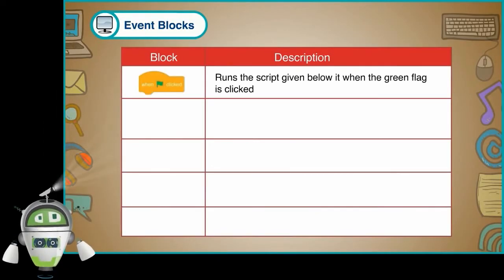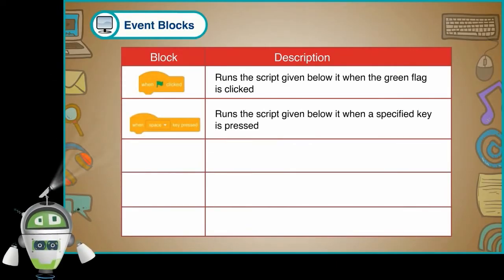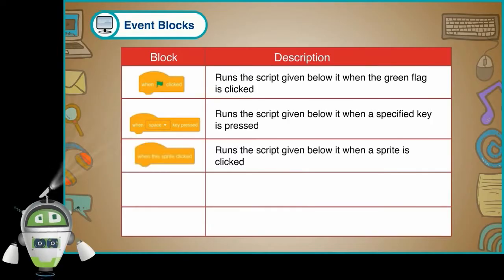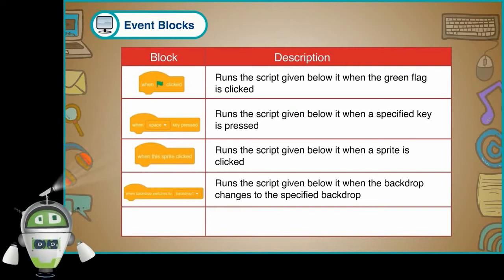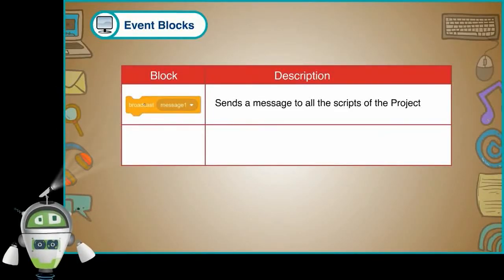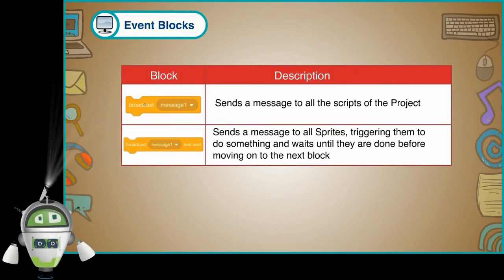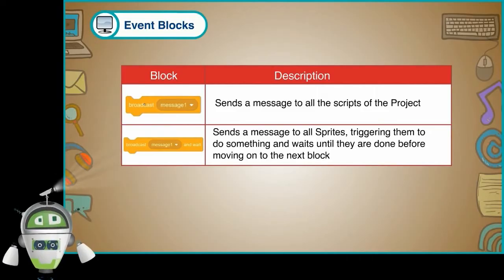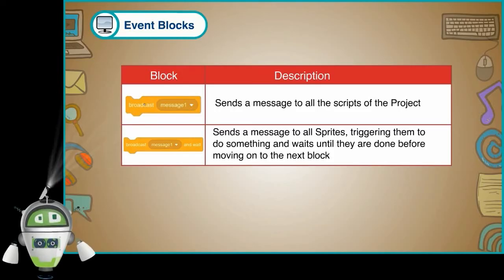Runs the script given below it when the green flag is clicked. Runs the script given below it when a specified key is pressed. Runs the script given below it when a sprite is clicked. Runs the script given below it when the backdrop changes to the specified backdrop. Activates the script when the specified broadcast has been sent. Sends a message to all the scripts of the project. Sends a message to all sprites triggering them to do something and waits until they are done before moving on to the next block.